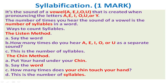The next one is the Chin Method — it is a very important and easy method for students. Put your hand under your chin and say the word. Count how many times your chin touches your hand. One touch means one syllable, two touches means two syllables, and so on. However many times your chin touches your hand, that is the number of syllables.